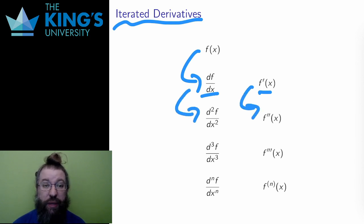I can ask for the rate of change of the rate of change. These are called iterated derivatives, or higher derivatives.